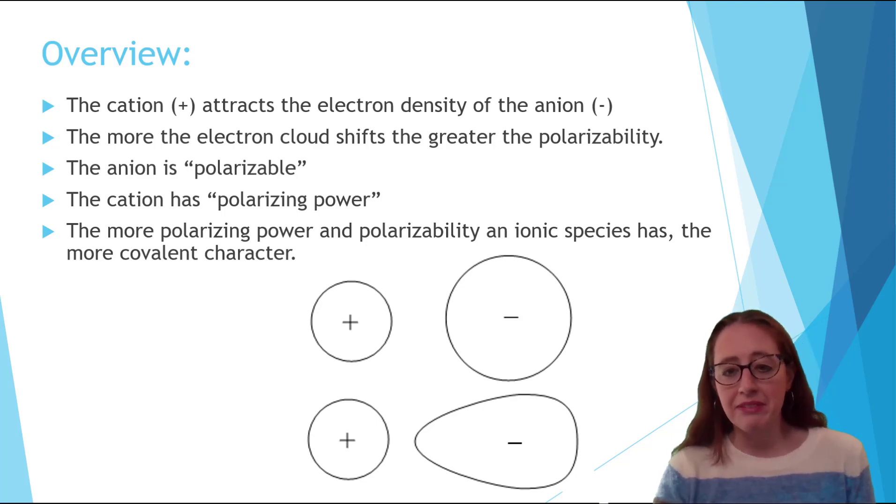Different cations have different abilities to shift the clouds. This is called polarizing power. Different anions have differing amounts that their clouds are able to shift when exposed to the same cation. This is called polarizability. The more of either of these an ionic species has, the more covalent character it has. So let's look at each of these three concepts in more detail.